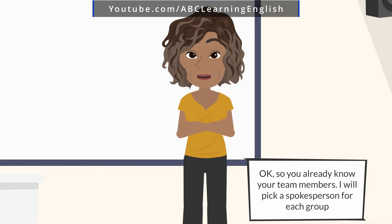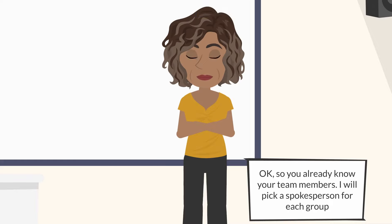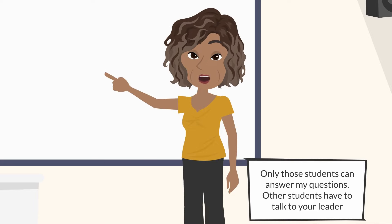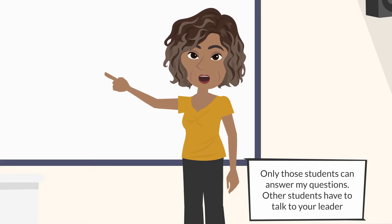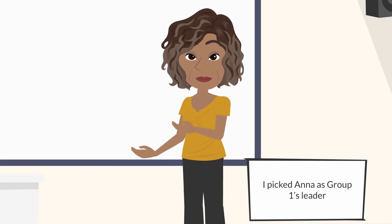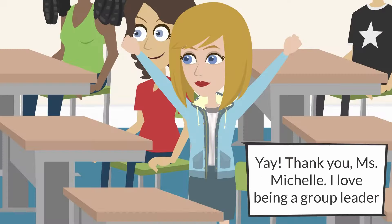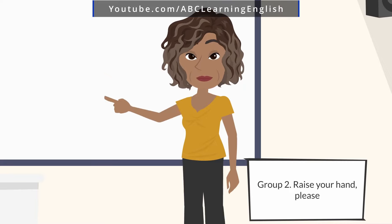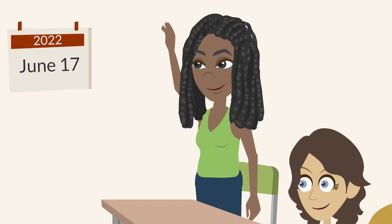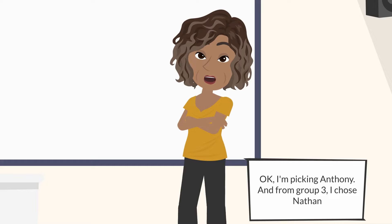Okay, so you already know your team members. I will pick a spokesperson for each group. Only those students can answer my questions. Other students have to talk to your leader. I picked Anna as group 1 leader. Yay, thank you Miss Michelle. I love being a group leader. Group 2, raise your hand please. Okay, I'm picking Anthony. And from group 3, I chose Nathan.